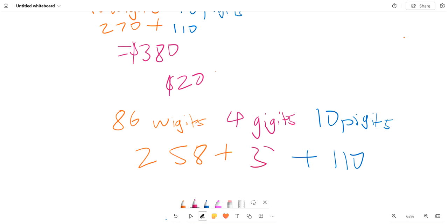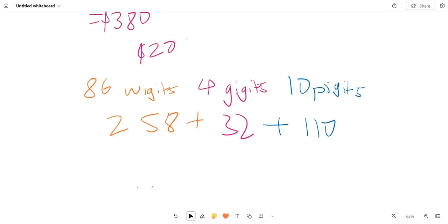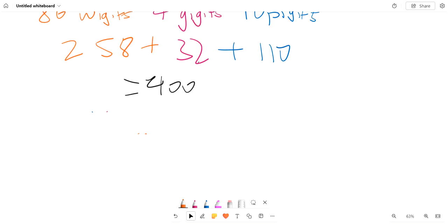We know that this is 258 plus 32 plus 110. We know that's gonna become 400. So this is the least amount of Gidgets that can be purchased. So the answer is just 86, 4, and 10. So this is the answer with the least amount of Gidgets.